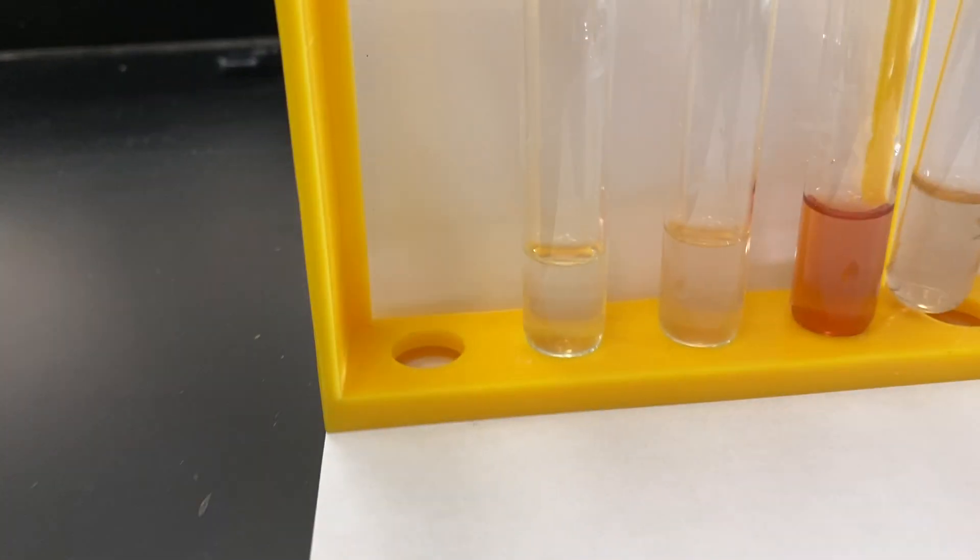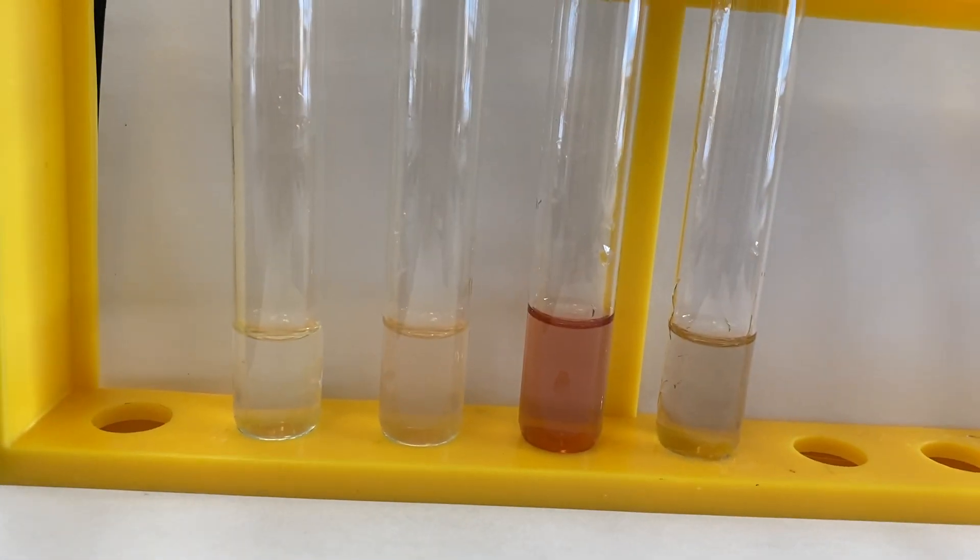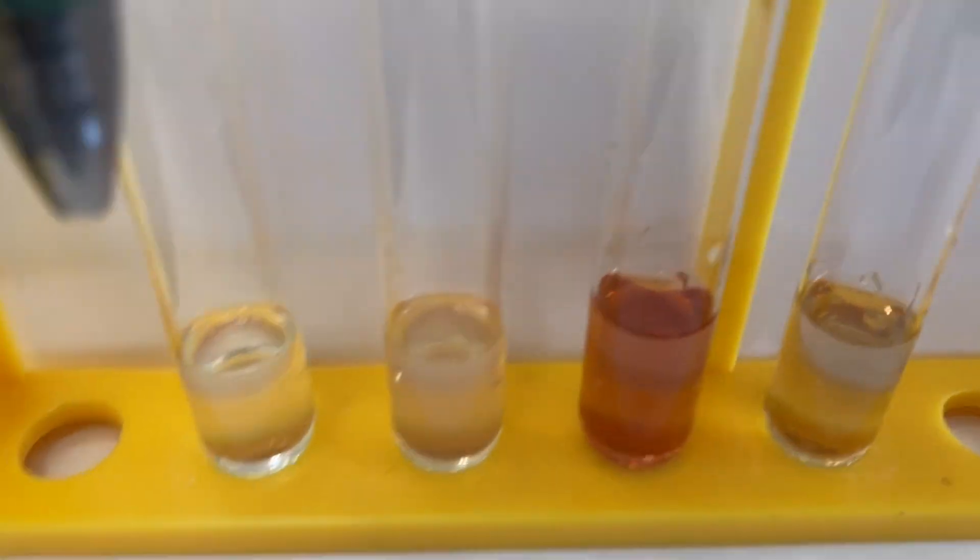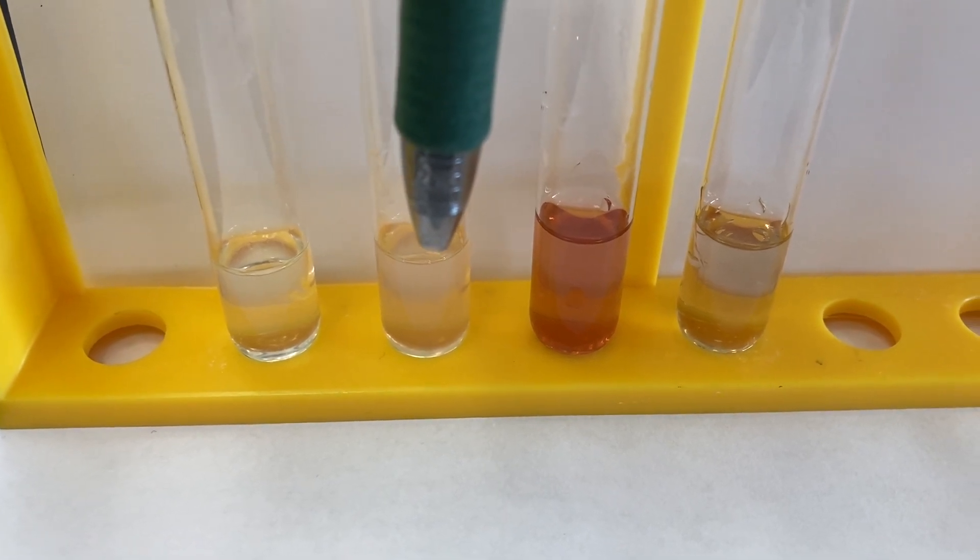Let's take a look at all four. Test tube A on the left, the one all the way to the left, that would be pH 1. The second one, pH 4.